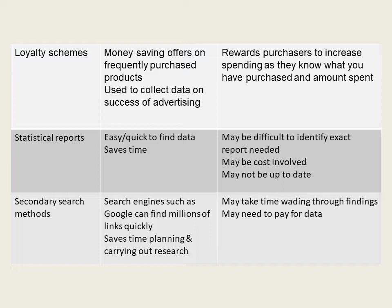Statistical reports — they're easy and quick to find data, so it saves time in the long run. But the disadvantages are that they're often quite difficult to read, and initially they're very expensive to create. Secondary search methods — search engines such as Google can find millions of links instantly. However, the disadvantage is that it often takes a lot of time to wade through all of the information.